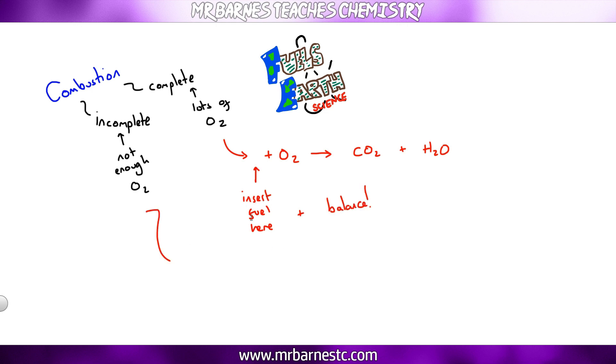If you have incomplete combustion, a similar thing happens. It reacts with oxygen, but because there's not enough oxygen, you get different things. You get carbon monoxide, CO. You get carbon or soot, which is C. You can still get carbon dioxide, and you always get water, H2O. Now, you'll usually be told this in an exam question, but they might turn around to you and say, what is produced by incomplete combustion. So carbon monoxide and soot are the key things.